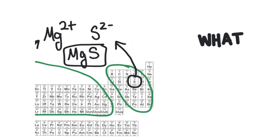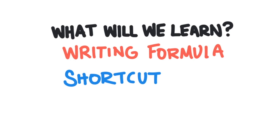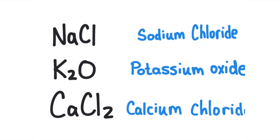So what are we going to learn in this video? First we're going to learn how to write the formulas when we're given the name of an ionic compound, and then we're going to learn a shortcut to do this quicker. Let's start by looking at a few formulas with the names so we can see how this works.